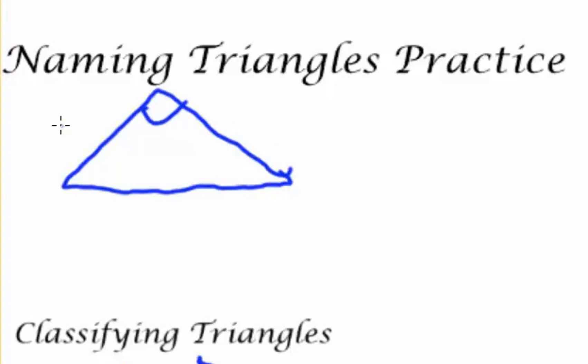Well, since two of the sides are equal, it's isosceles. And with a right angle, it's an isosceles right triangle.